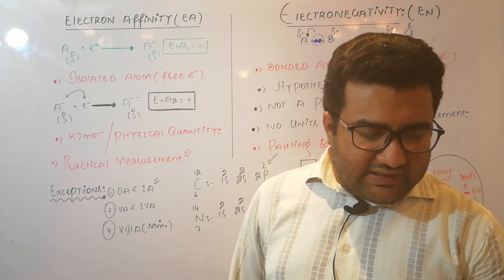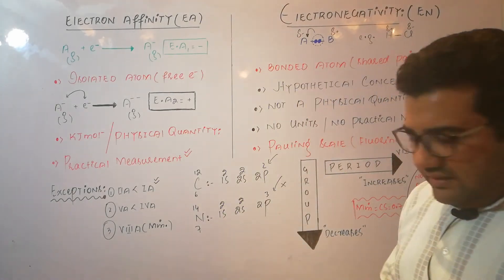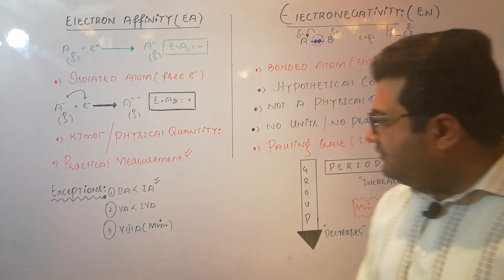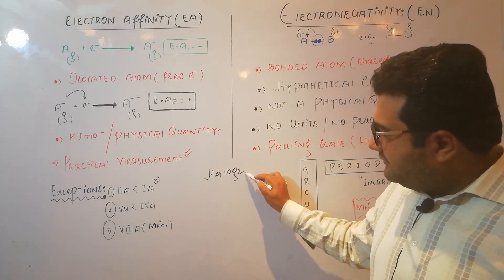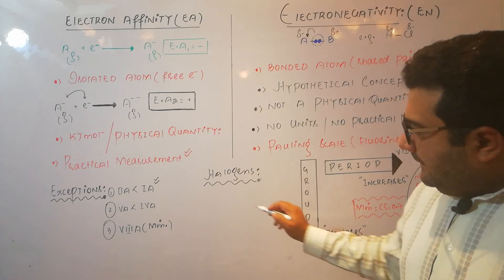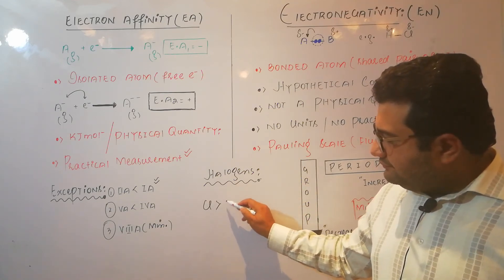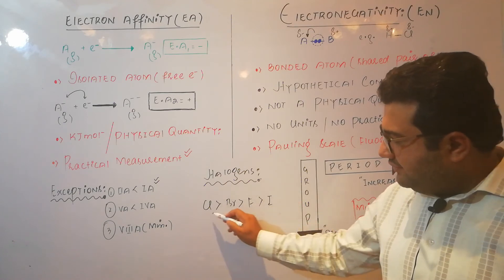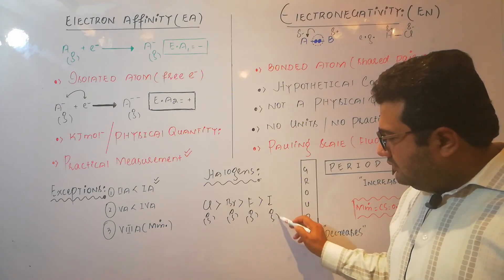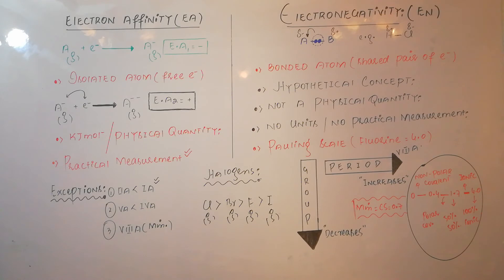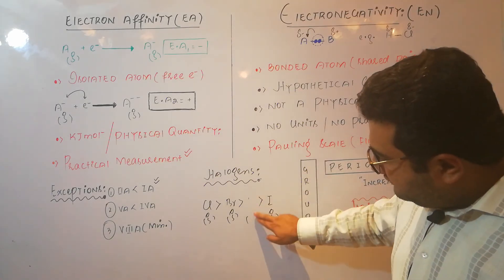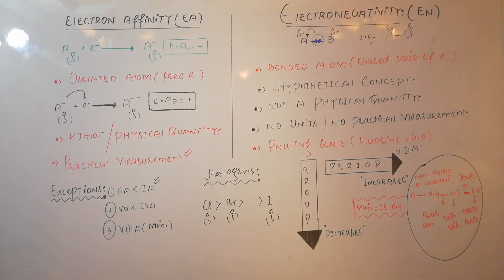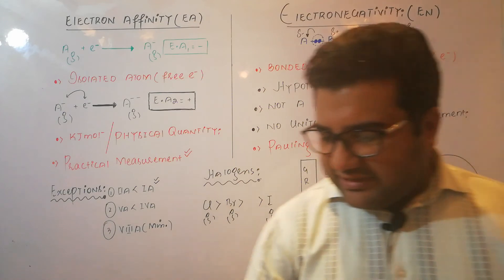Electron affinity also determines the reactivity of non-metals. Regarding the trend of electron affinity in halogens — very important for MCQs and board exams — the order is: chlorine > bromine > fluorine > iodine. If you remove fluorine, the remaining trend is normal (electron affinity decreases down the group: Cl > Br > I). So the exception is shown specifically by fluorine, which has lesser electron affinity despite being at the top of the group.